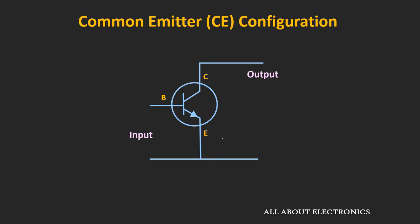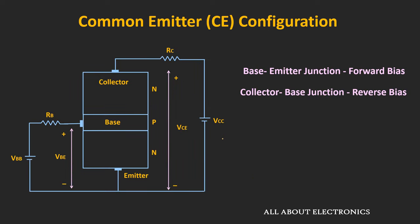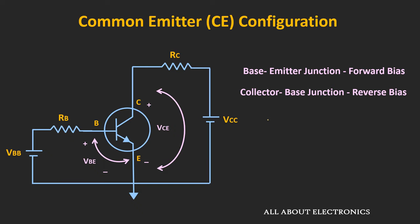To use the BJT as an amplifier, the base-emitter junction is forward biased, while the collector-base junction is reverse biased. Schematically, it can be represented like this. If we see the direction of the currents, then it will look like this.